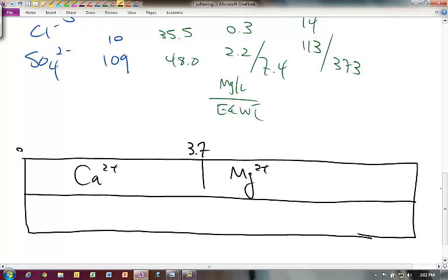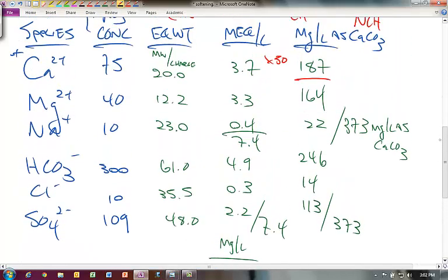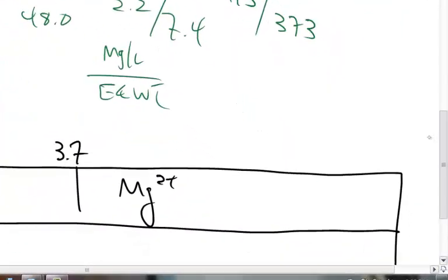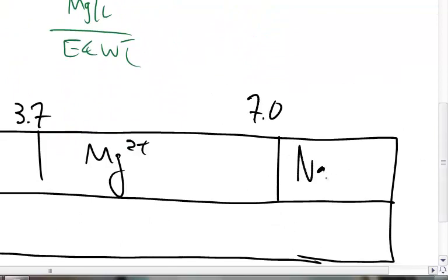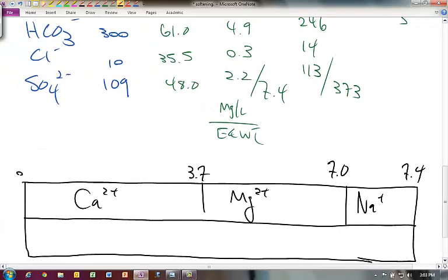Magnesium 2+ is going to go from 3.7, then we're going to add another 3.3. So that gives us 3.7 and 3.3, which is 7.0. Then our last one is sodium Na⁺ at 7.4. So we know what these differences are from a graphical perspective. This is our cations.